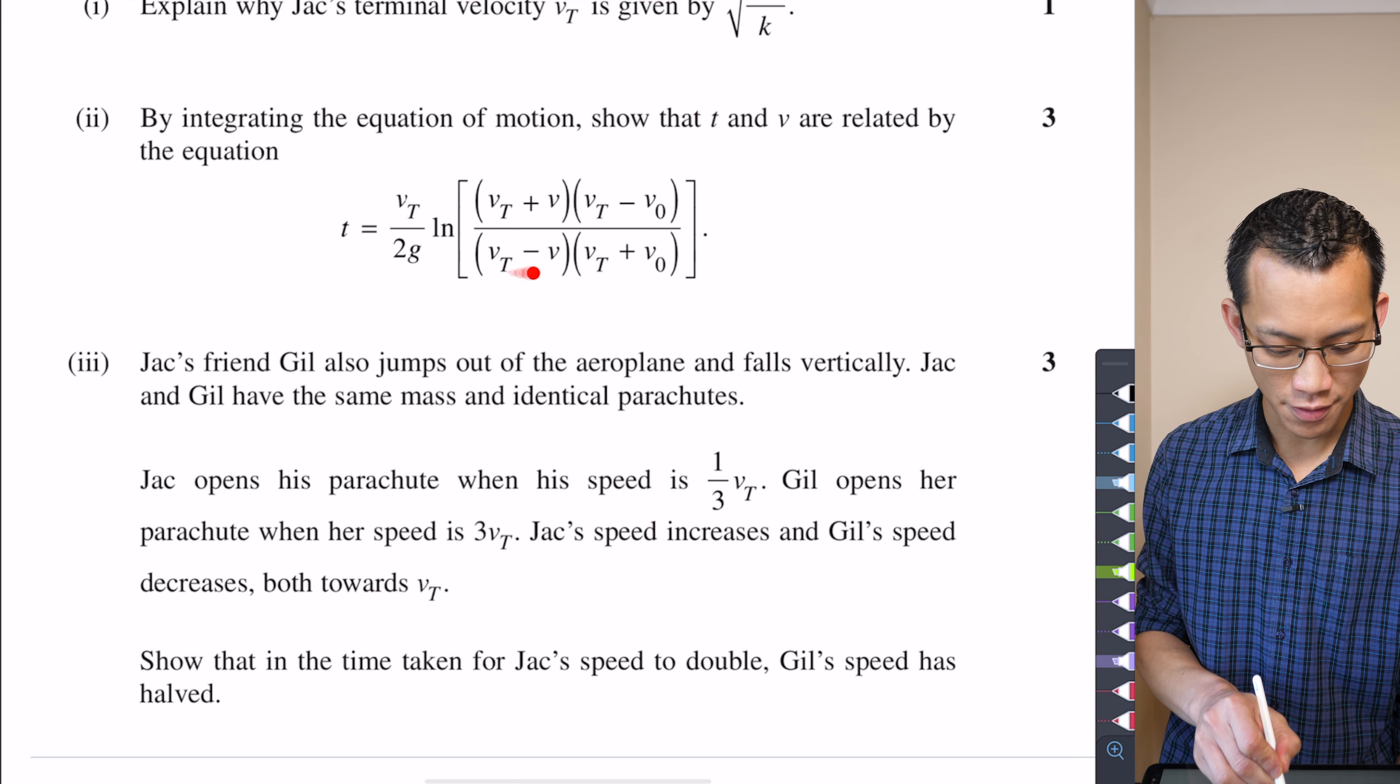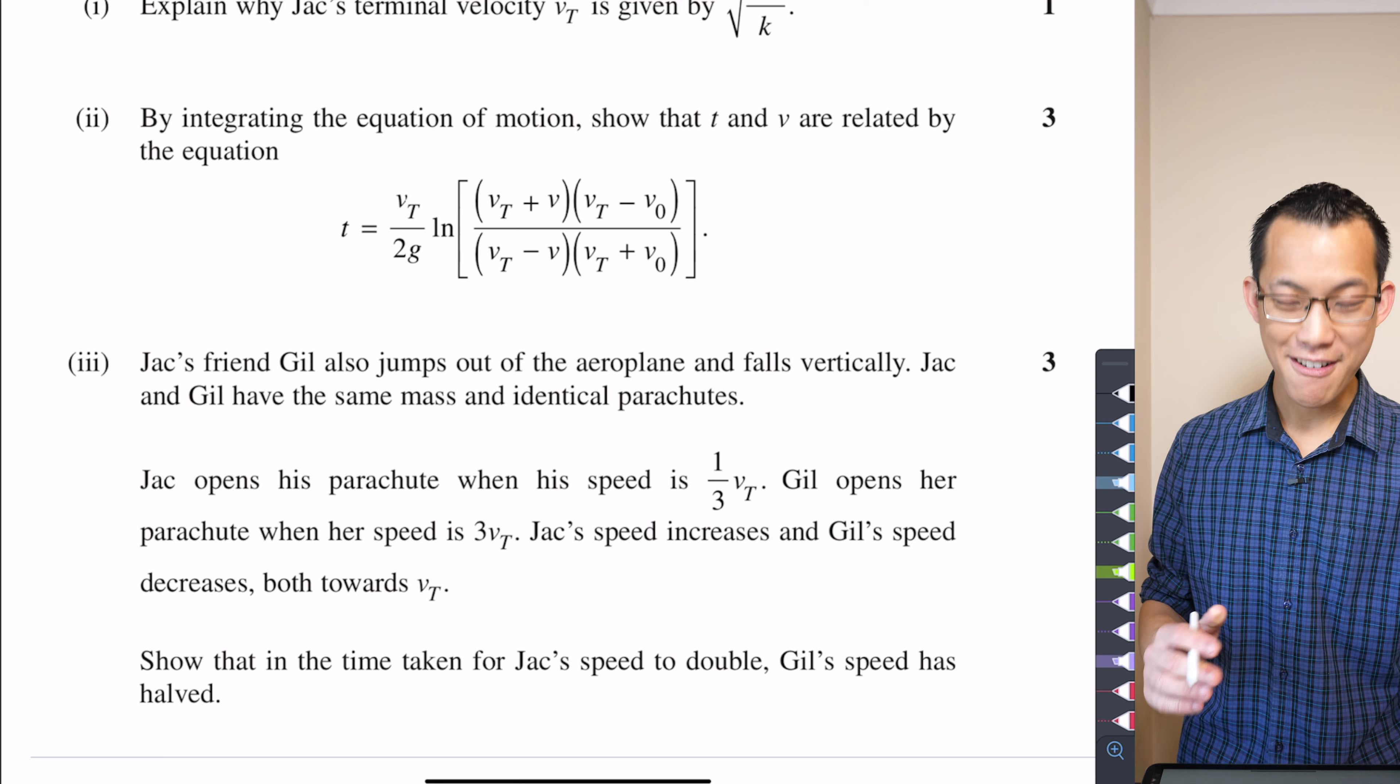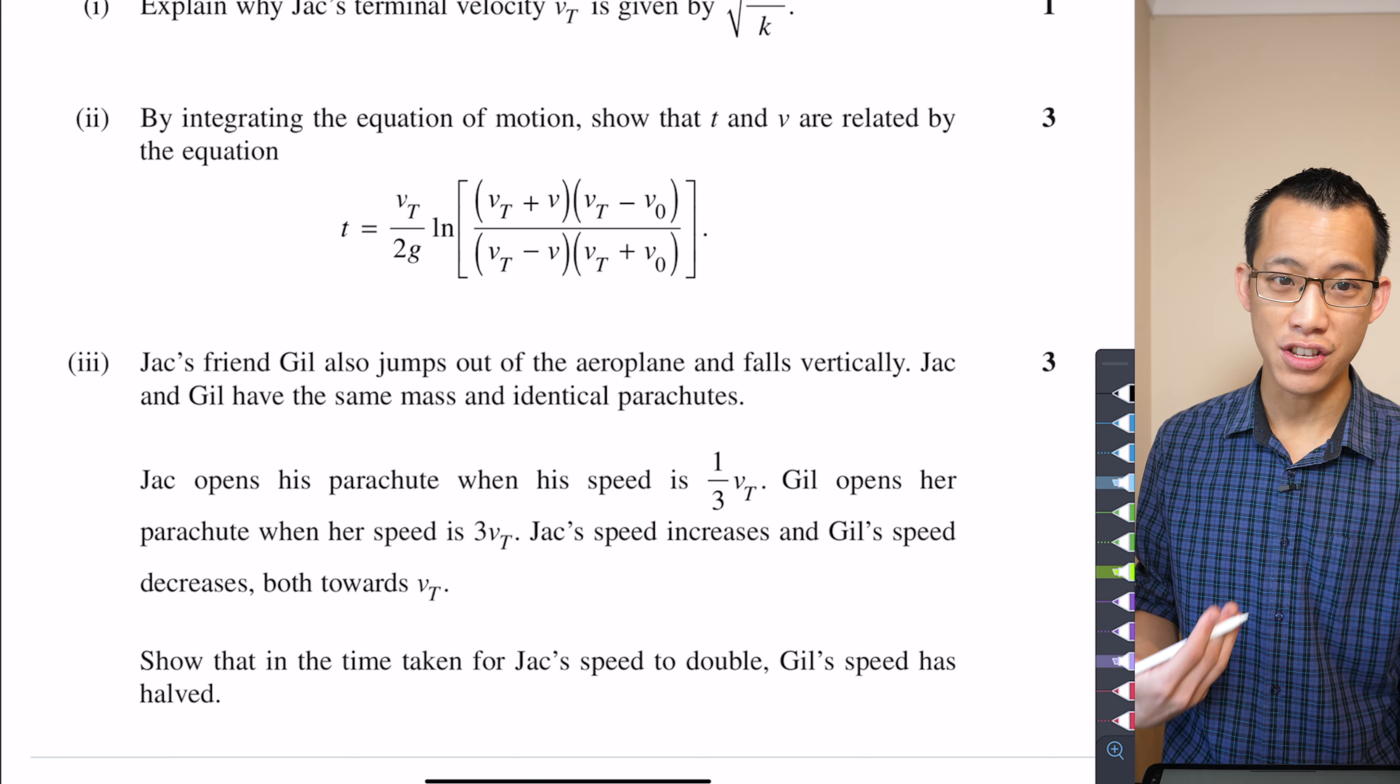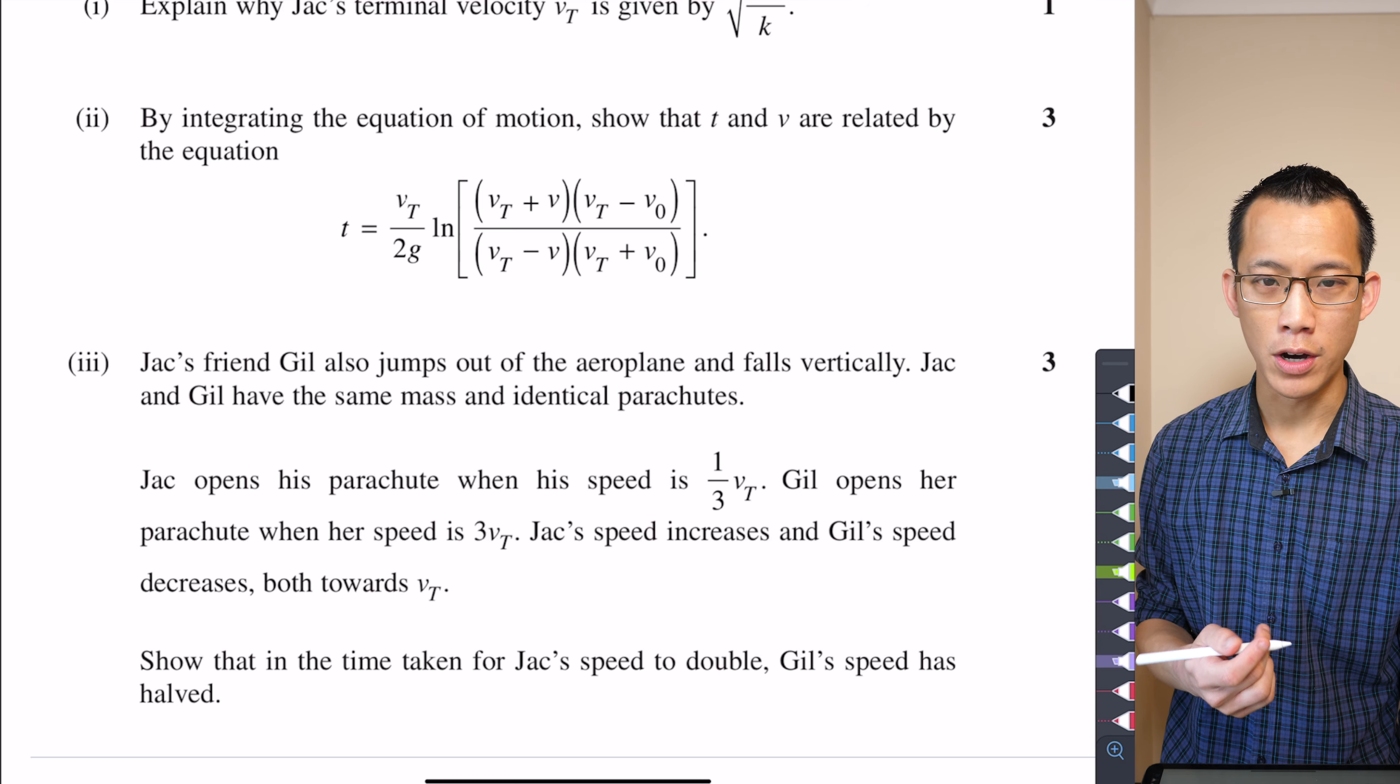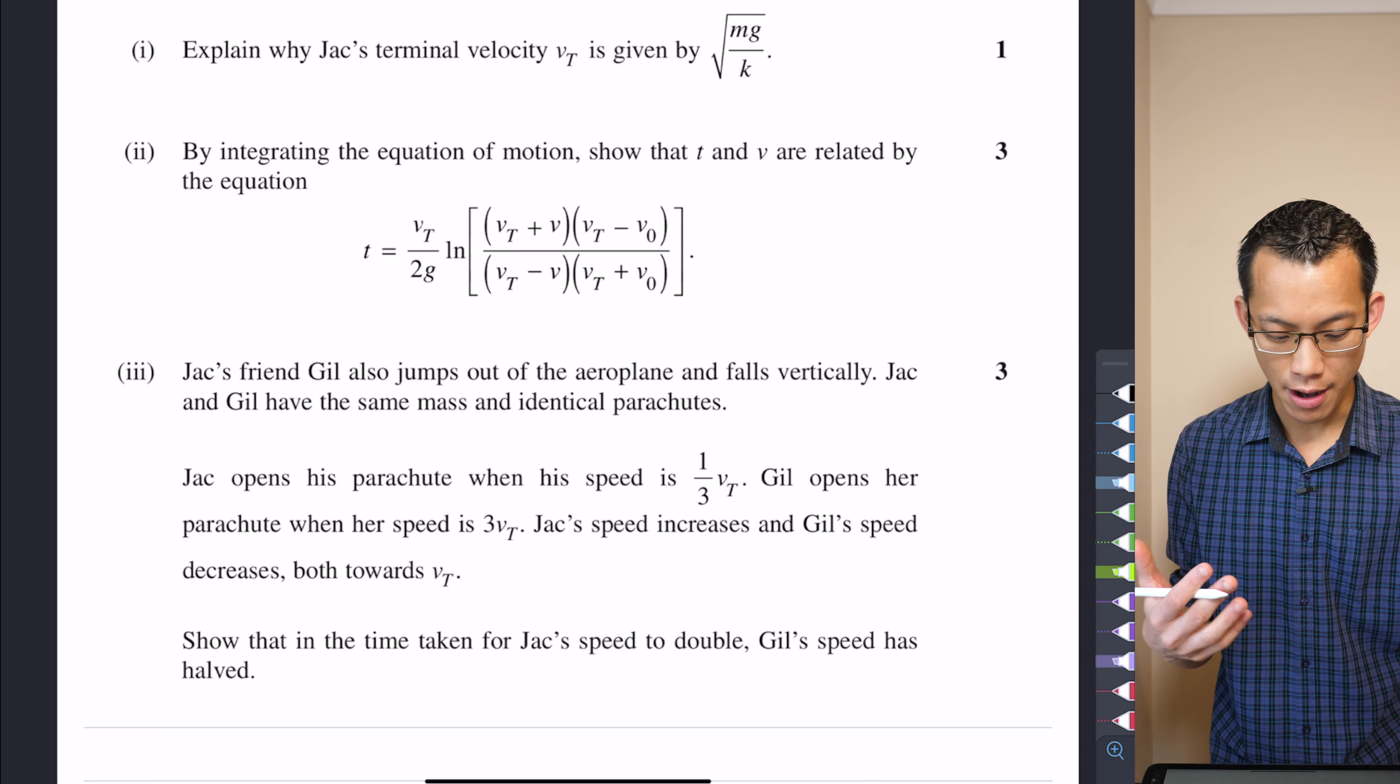Look how many times it appears in parts two and three. I count one, two, three, four, five, six, seven, eight times throughout those two parts there at the end of the question. So you're clearly going to need to use that result in part one quite substantially in parts two and three. So I really like that.